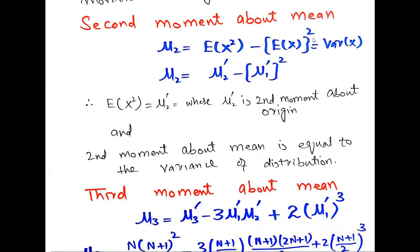The second moment about the mean, μ₂, is represented by μ₂ = E(X²) minus [E(X)]², which equals the variance of X. This is the formula for variance of X. The key point to note is that the second moment about the mean is always equal to the variance.